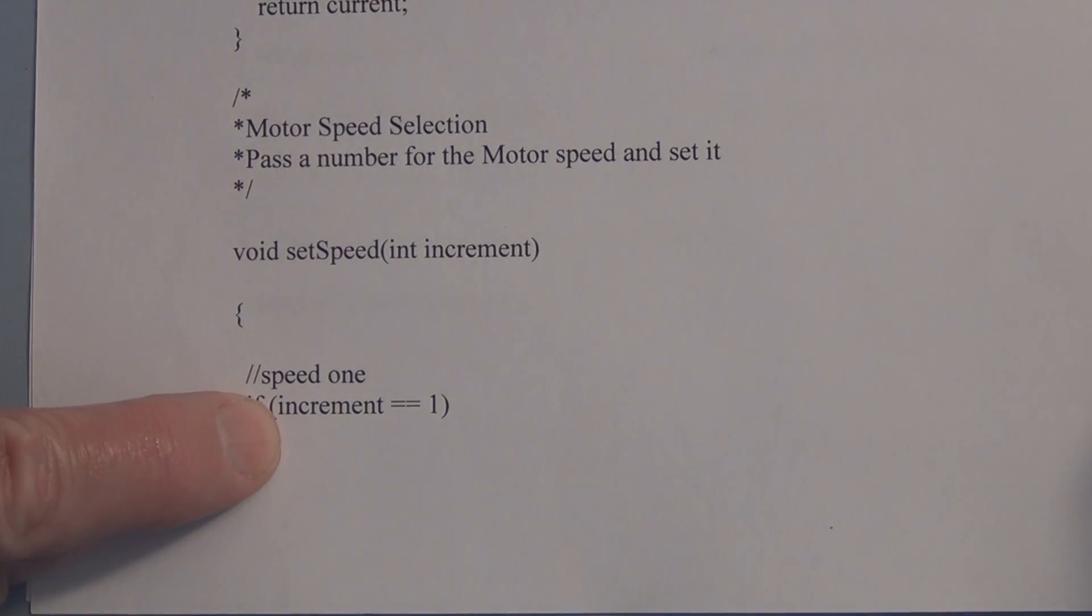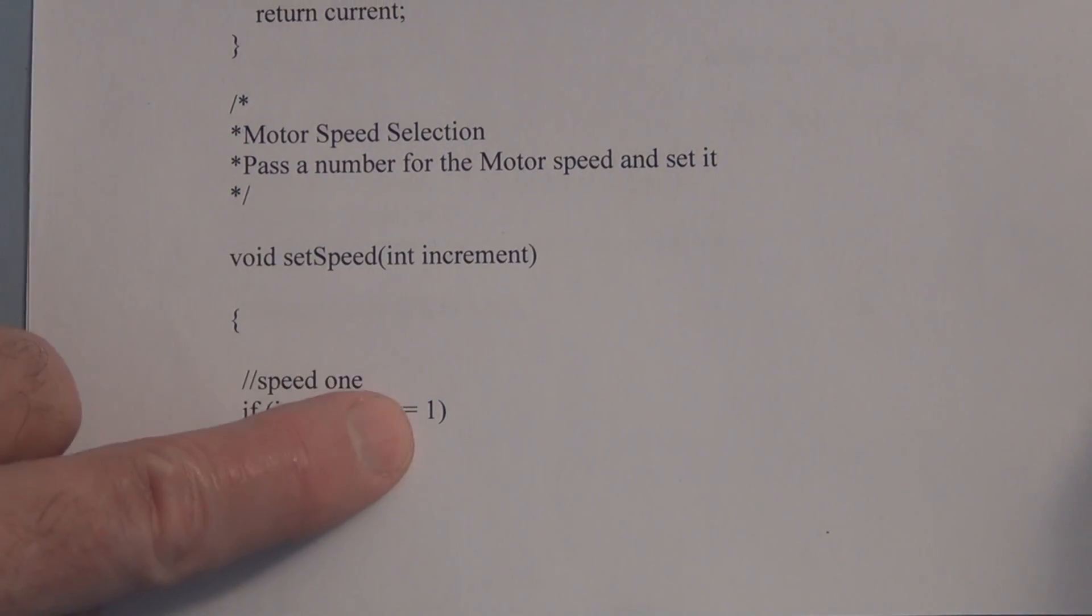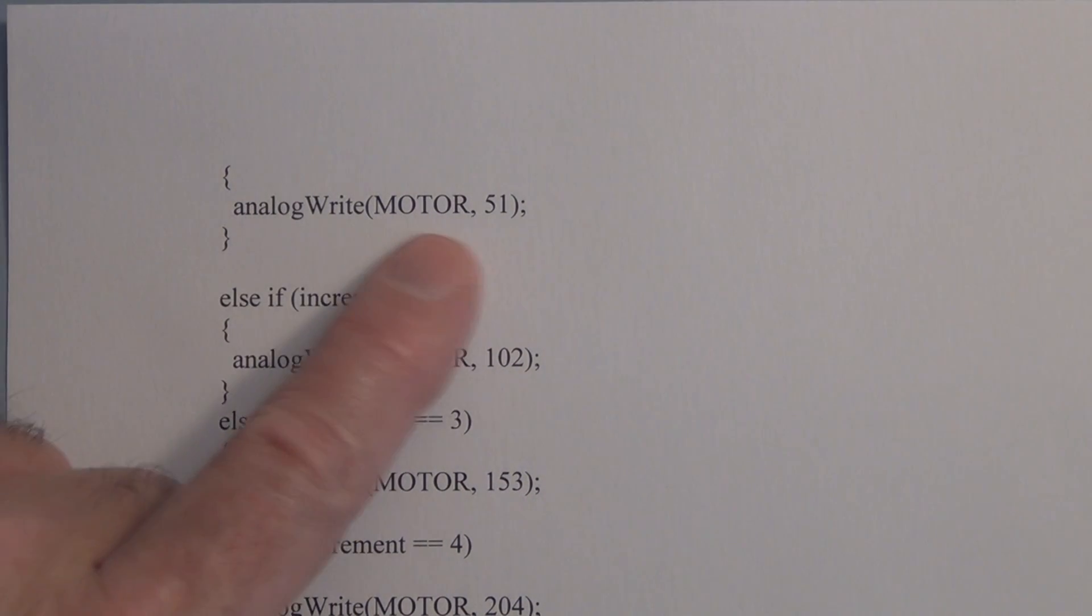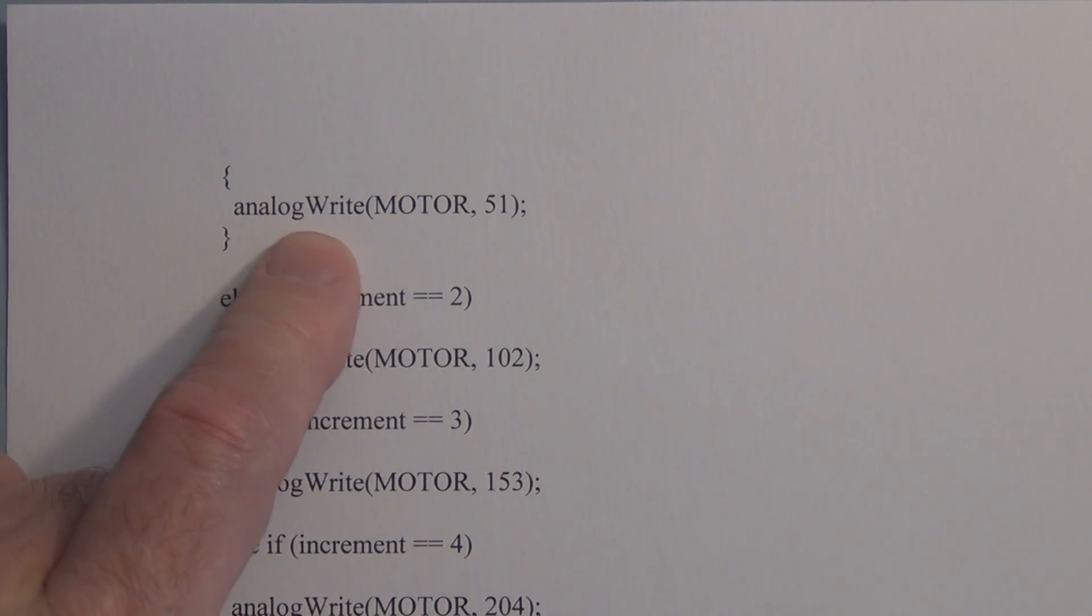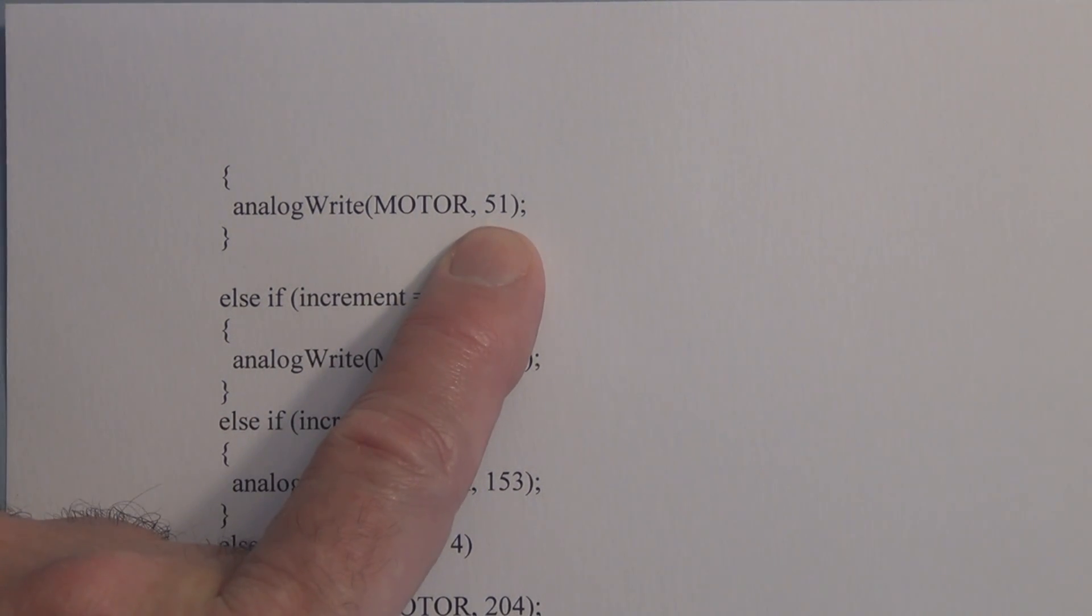If increment, that's the variable that we're going to be incrementing to step through these individual speeds. If increment is equal to the value of 1, the very first analog write we're going to do is motor. We have two arguments here for the analog write. And it's motor, which has the pin 9 associated with it. And then this is the value that is associated with the pulse width modulation. So your motor might be different and you can add to this or subtract to this. I chose five individual speeds.